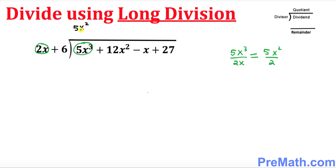Write down 5x squared over 2 right on top. Once you put this up here, multiply 5x squared over 2 with both terms in the divisor. That's going to give you 5x power 3 plus 15x squared.